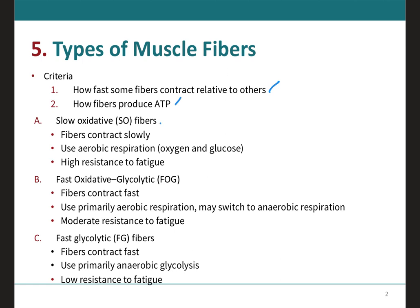We have what we call the slow oxidative fibers, the fast oxidative glycolytic fibers, and the fast glycolytic fibers. These fibers can also be abbreviated the following way: slow oxidative fibers are classified as SO fibers, fast oxidative glycolytic fibers as FOG fibers, and fast glycolytic fibers as FG fibers.